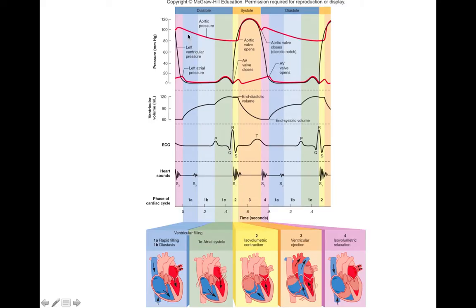Up here if we look at pressure, aortic pressure is maintaining a steady pressure. Left ventricular pressure is still pretty low — although it's continuing to fill with blood, it's still holding steady — and pretty much the same for left atrial pressure.